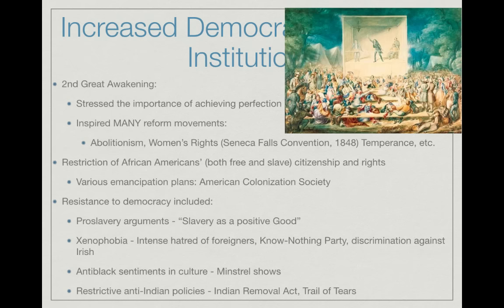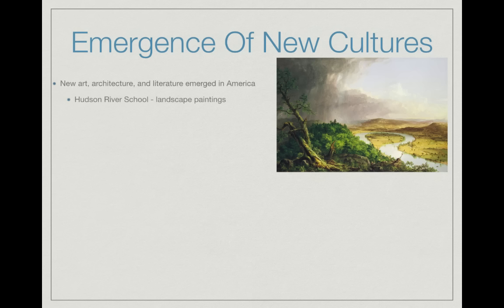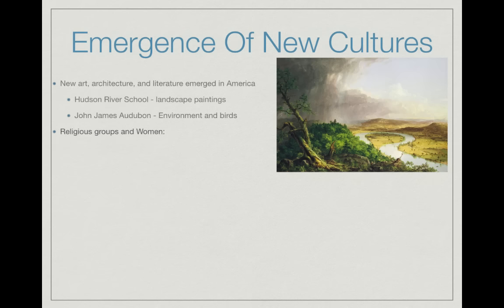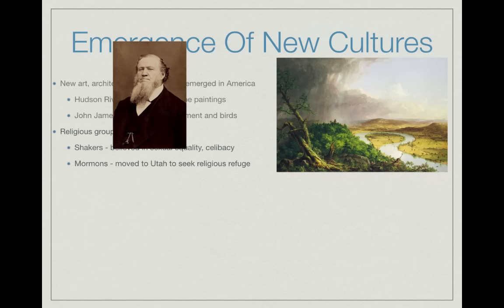There were also restrictive anti-Indian policies; the Indian Removal Act led to the Trail of Tears. New cultures emerged during this time: the Hudson River School focused on landscape and environmental paintings — geographic features. John James Audubon contributed enormously to the study of birds and the environment. New religious groups emerged, including the Shakers, who believed in sexual equality and celibacy, and the Mormons, led by Brigham Young, who moved to Utah seeking religious refuge. The Seneca Falls Convention of 1848 was a women's rights convention — even Frederick Douglass attended — and they issued the Declaration of Sentiments, asserting that all men and women are created equally.